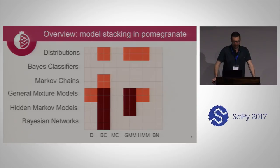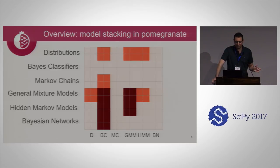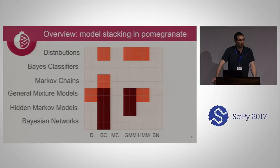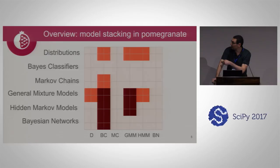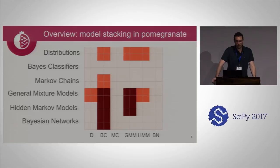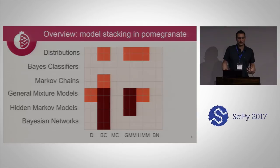In comparison to other packages: orange indicates ways other packages allow stacking, but not as flexibly as Pomegranate. Dark red indicates ways you can stack in Pomegranate that no other Python package, to my knowledge, allows. For example, with a simple distribution inside a Bayes classifier, you can create a Gaussian Naive Bayes or multinomial Naive Bayes in scikit-learn, but in Pomegranate you can create an exponential Naive Bayes, Bernoulli Naive Bayes, or any other type — even with different types of distributions modeling different features.